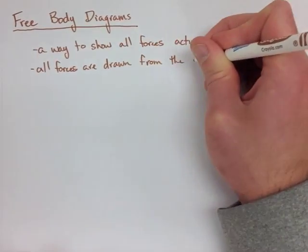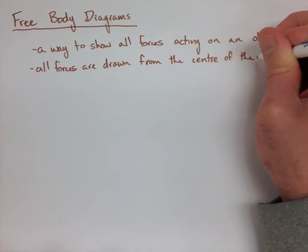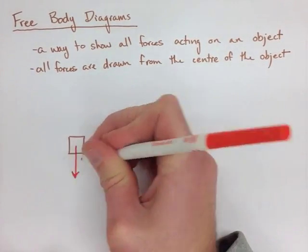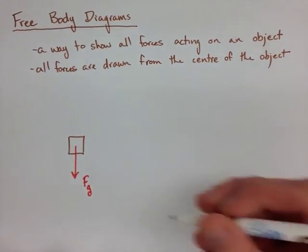When we draw free body diagrams, we always put the forces drawn from the center of the object. When we're drawing an object, we can always represent it as a square, as we've done here.